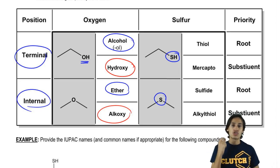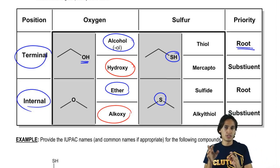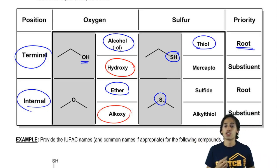When a sulfur is on the terminal end and it's the root, just like alcohol is the root of the name, then we're going to name it a thiol. So you can think of alcohol and thiol go together.